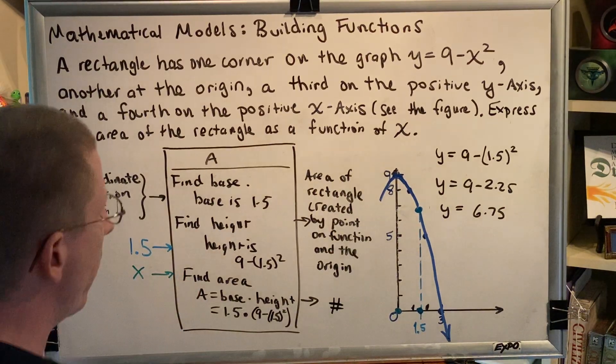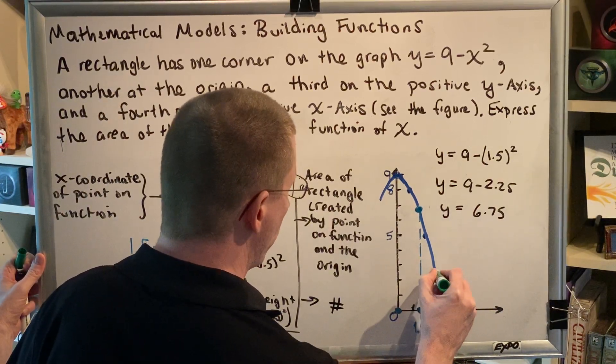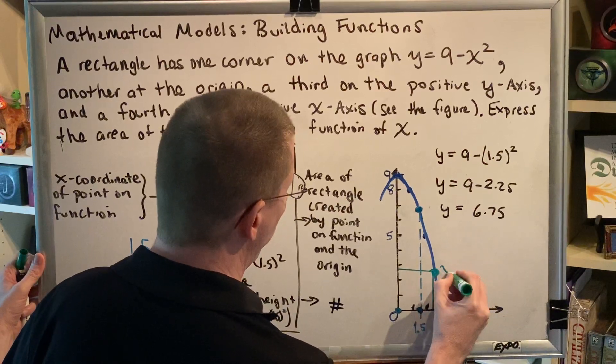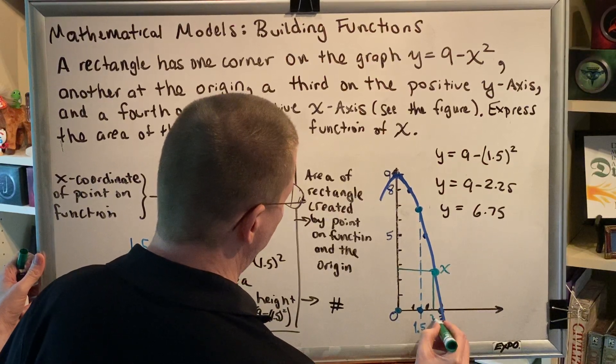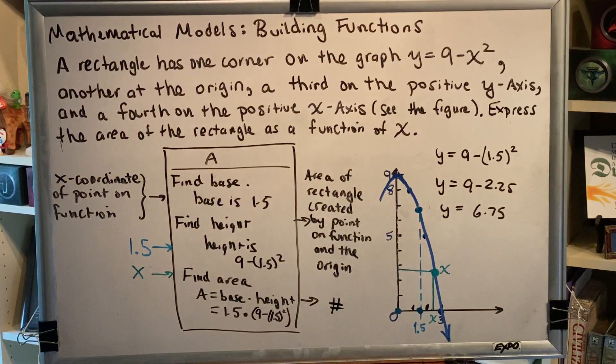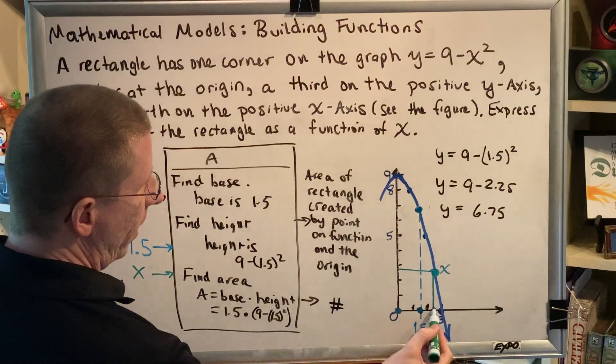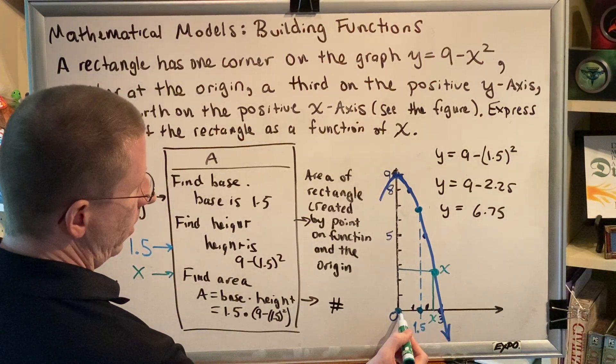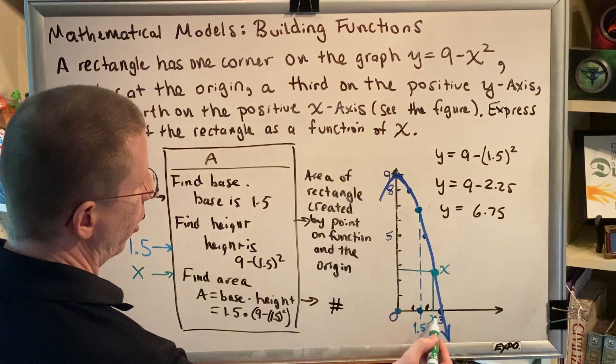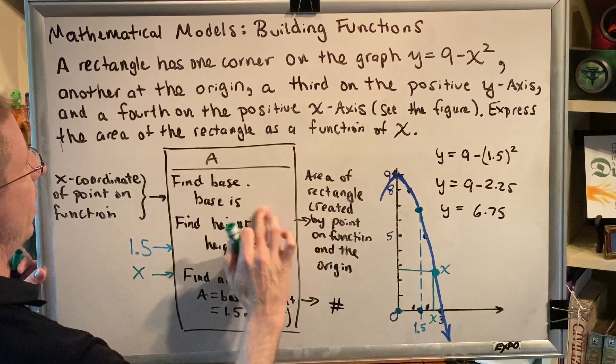When we draw our diagram, we don't know where the point will be. I'll draw an arbitrary shape here. The x-coordinate of that point is x. We need to go through the same steps. First, figure out the base. This is at x, this is at 0. The base is the distance between them, found by subtraction: x - 0 = x. So the base is x.